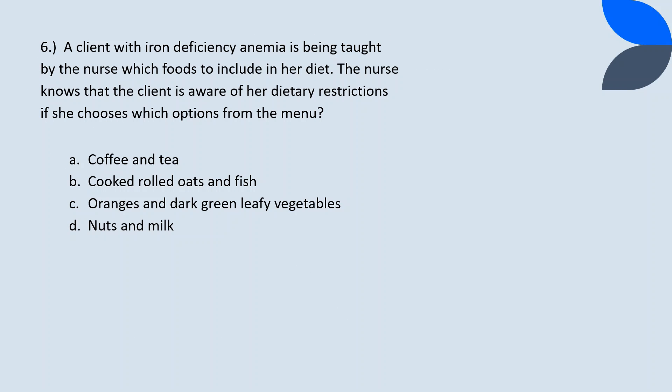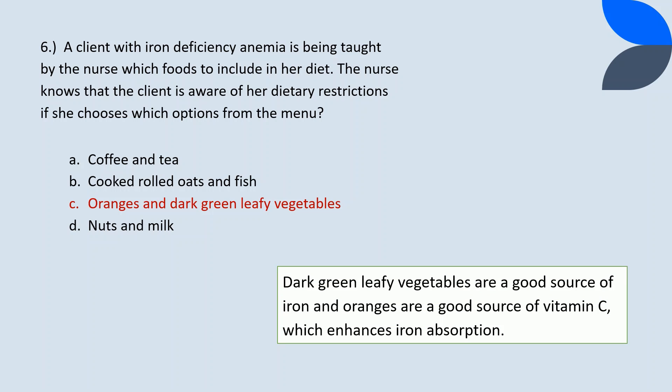Question 6. A client with iron deficiency anemia is being taught by the nurse which foods to include in her diet. A nurse knows that the client is aware of her dietary restrictions if she chooses which options from the menu. The correct answer is C. Dark green leafy vegetables are a good source of iron, and oranges are a good source of vitamin C, which enhances iron absorption.